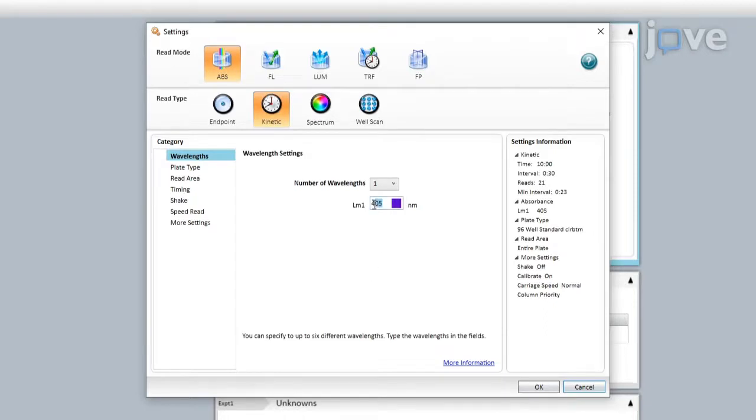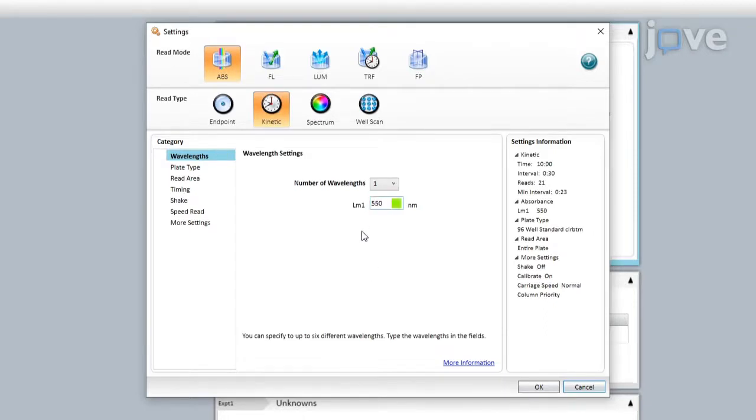Select 550 nanometers in the Wavelength tab. Then switch to the Timing tab and adjust the total run time to 60 minutes with an interval of 30 seconds.